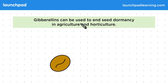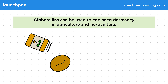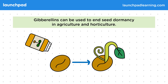Gibberellins can be used to end seed dormancy in agriculture and horticulture. By applying gibberellins we can make a dormant seed sprout and start growing. For the exam, you don't need to recall the definition of seed dormancy, but you do need to remember that gibberellins can end it.